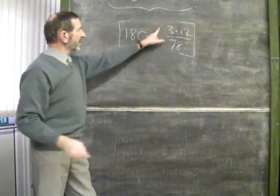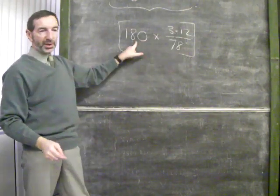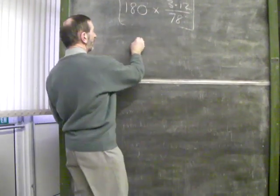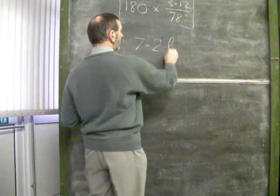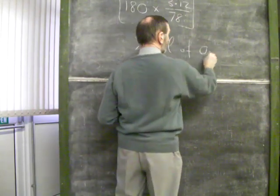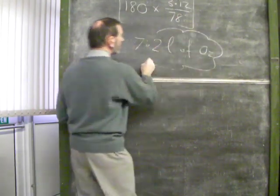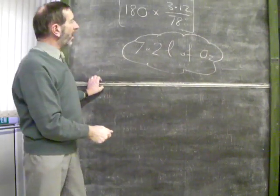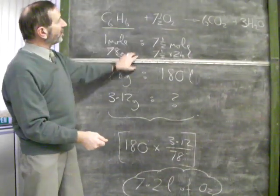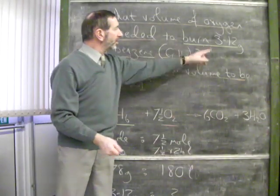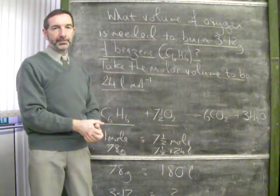So, then it is this fraction of 180. It will give us an answer of 7.2 litres of oxygen. 7.2 litres of oxygen gas is required to burn 3.12 grams of benzene.